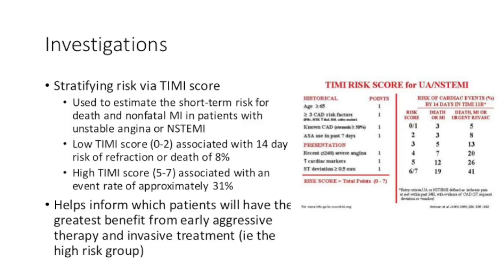The TIMI score takes into account patient's age, coronary risk factors, previous history of MI, aspirin use, and types of symptoms. The score can be divided into low, intermediate, and high. A low TIMI score — for example 0 to 2 — is associated with a 14-day risk of re-infarction or death of approximately 8%. A high TIMI score of around 5 to 7 is associated with an event rate of approximately 31%. This helps inform which patients will have the greatest benefit from early aggressive therapy and invasive treatments, i.e. the high-risk group.